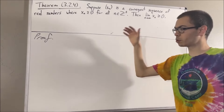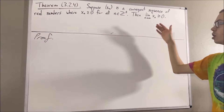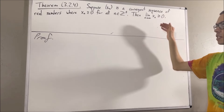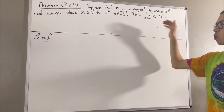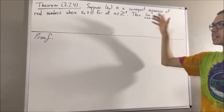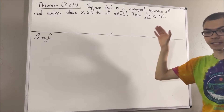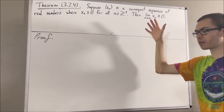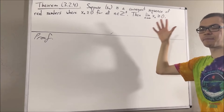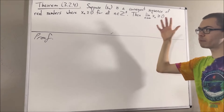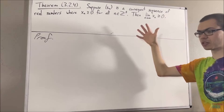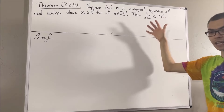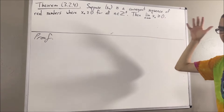Now, before we get into the proof, let's first remind ourselves what the definition of the limit of a sequence is. To say that xn converges to x means for every epsilon greater than zero, there exists a positive integer k such that for all positive integers n greater than or equal to k, the absolute value of xn minus x is less than epsilon.